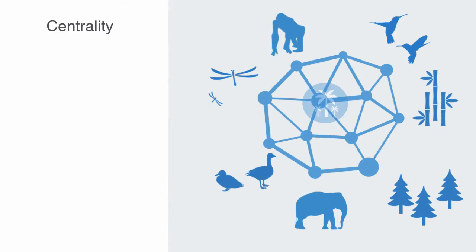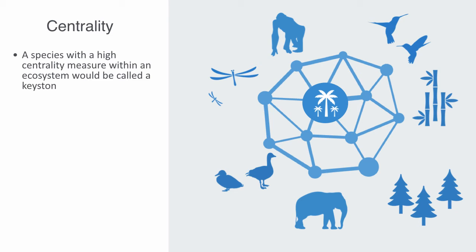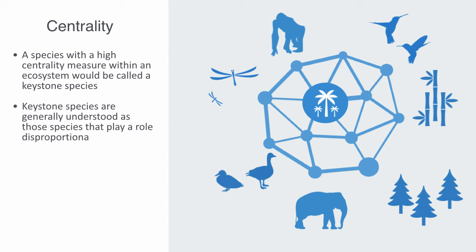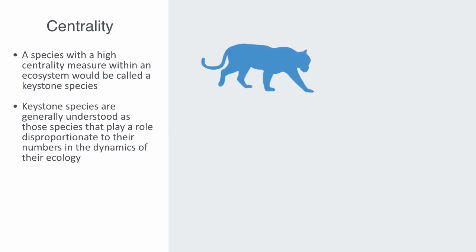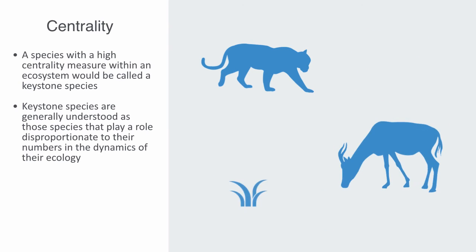Centrality is a measurement of how central a node is within a network and thus how significant it is within the system. A species with a high centrality measure within an ecosystem would be called a keystone species. Keystone species are generally understood as those that play a role disproportionate to their number in the dynamics of their ecosystem. A classical keystone species is a predator that prevents a particular herbivorous species from eliminating dominant plant species.